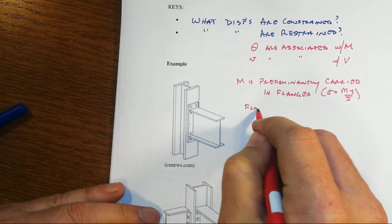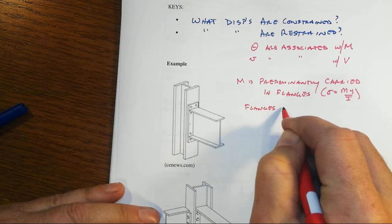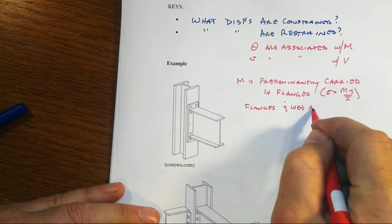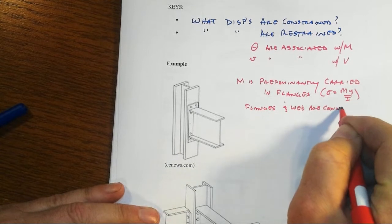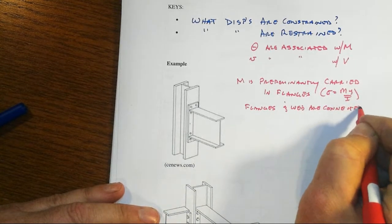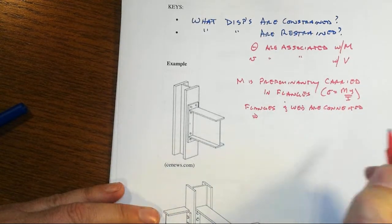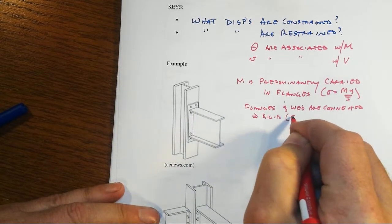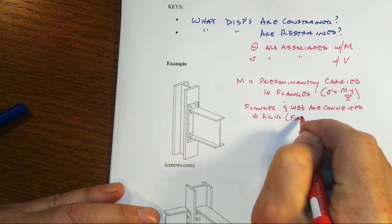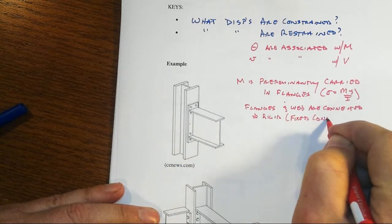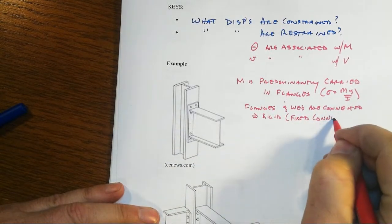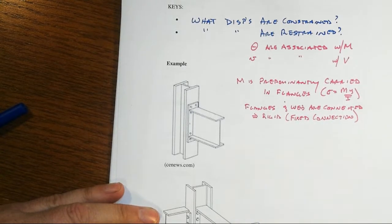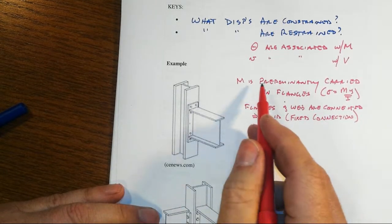But that means that in this case, moment predominantly carried in the flanges, the flanges and, in this case, the web are connected. So that means we're transferring both moment and shear, this is a rigid or a fixed connection, not support, but connection. That's kind of a key thing.